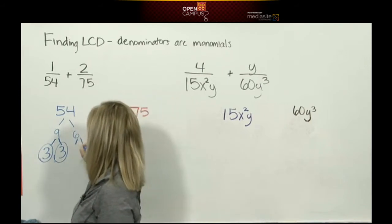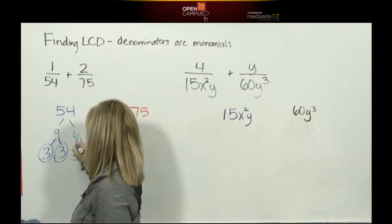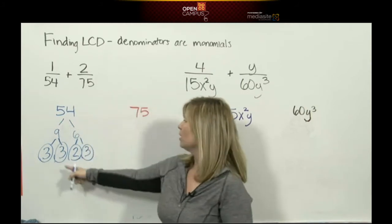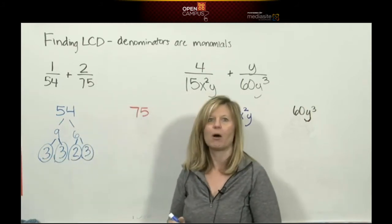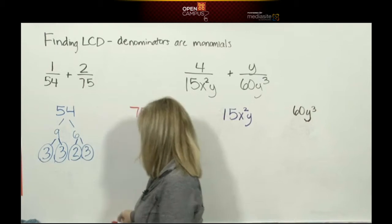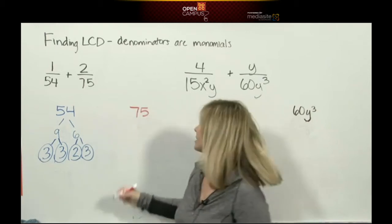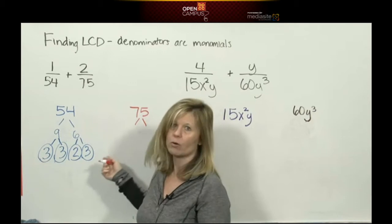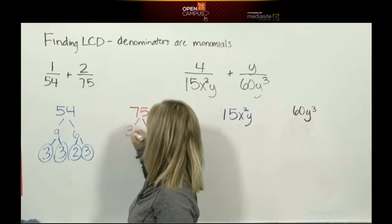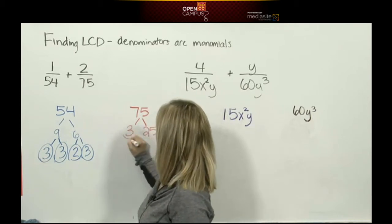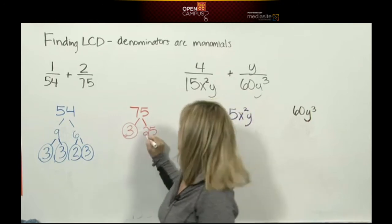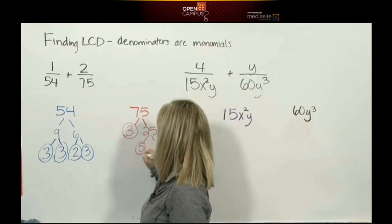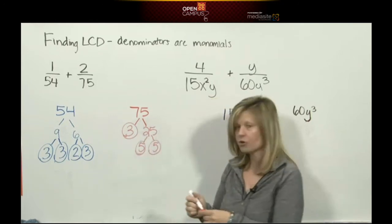So now I have 54 factored into the product of prime numbers. Let's do the same thing for 75. That is not prime. The first thing I think of is 3 quarters with 75, so this would be 3 times 25. 3 is prime, 25 is not—it's 5 times 5.